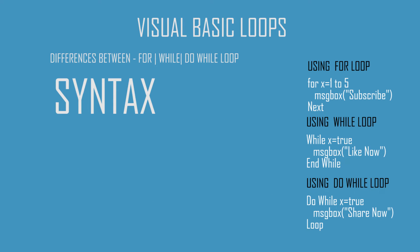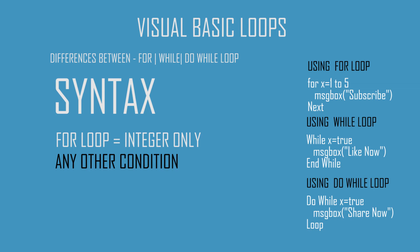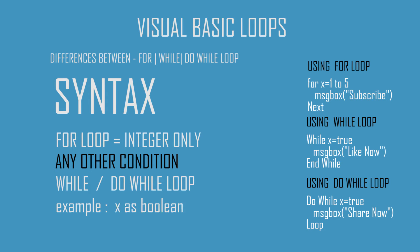The second difference is that when using the for loop you can only use an integer number as the condition, but you can use almost any other condition when using a while or do-while loop. For example, you can even use a boolean as the condition.